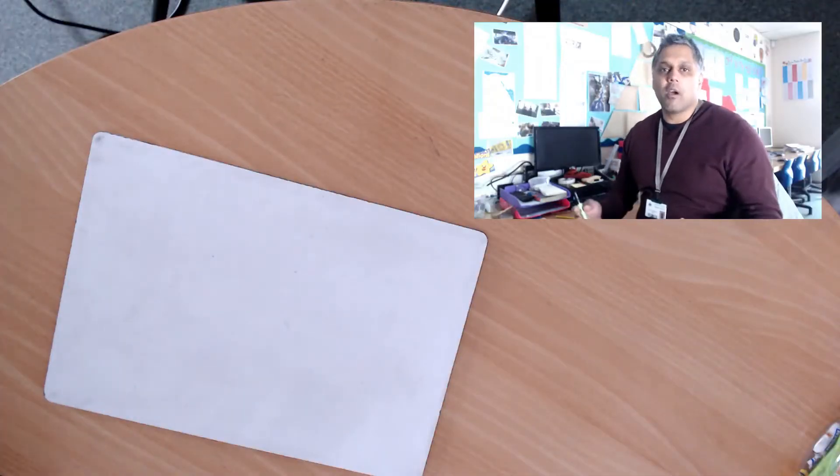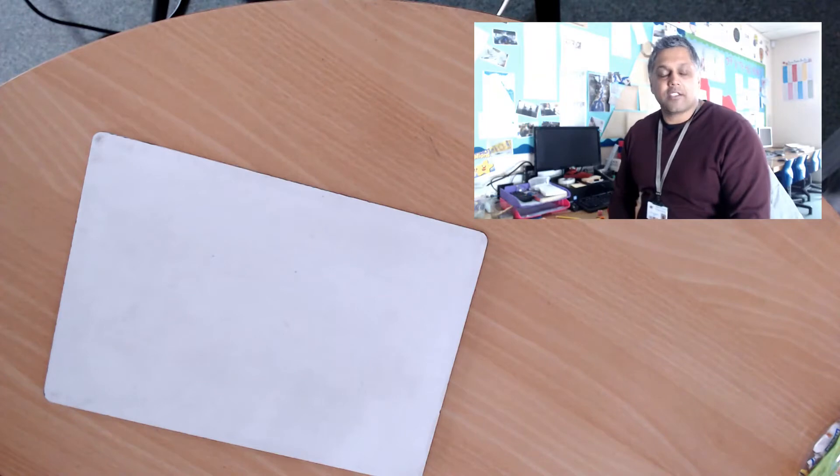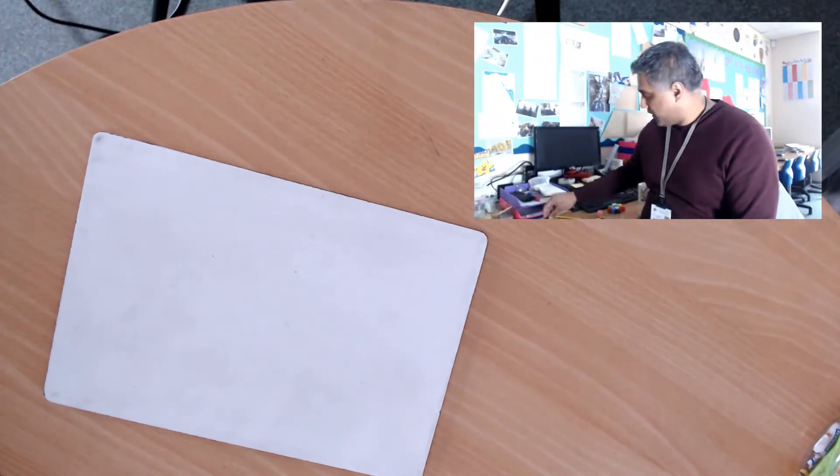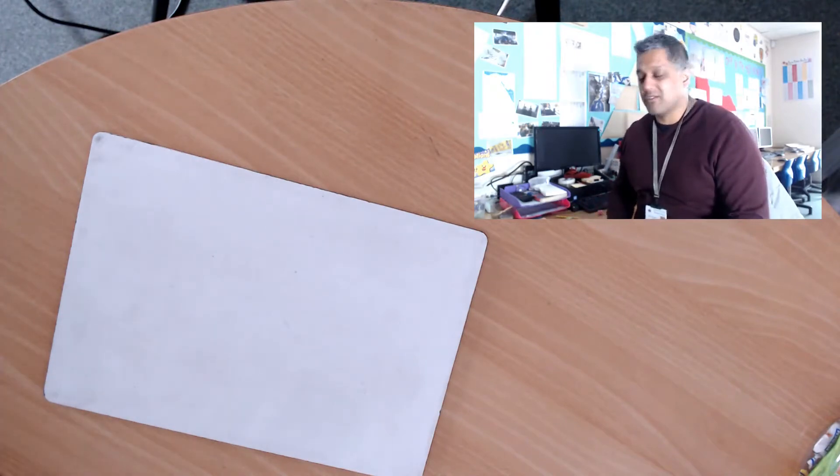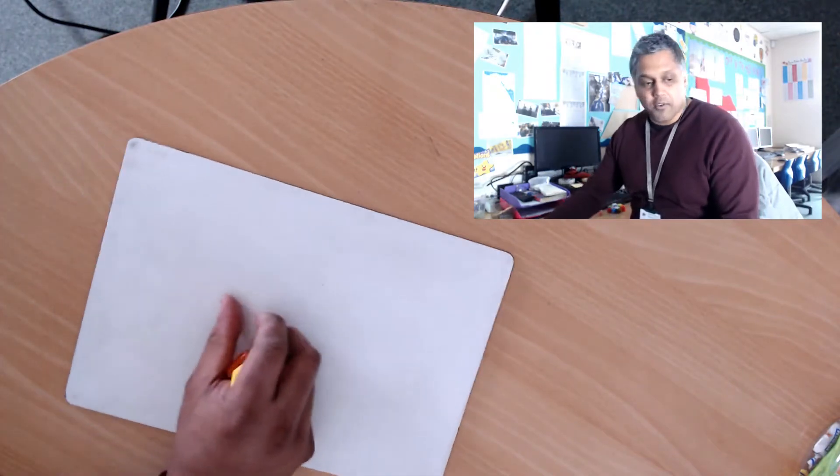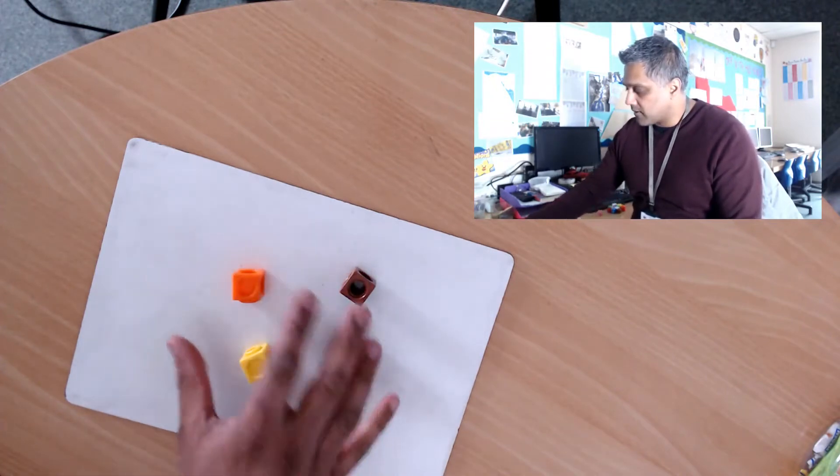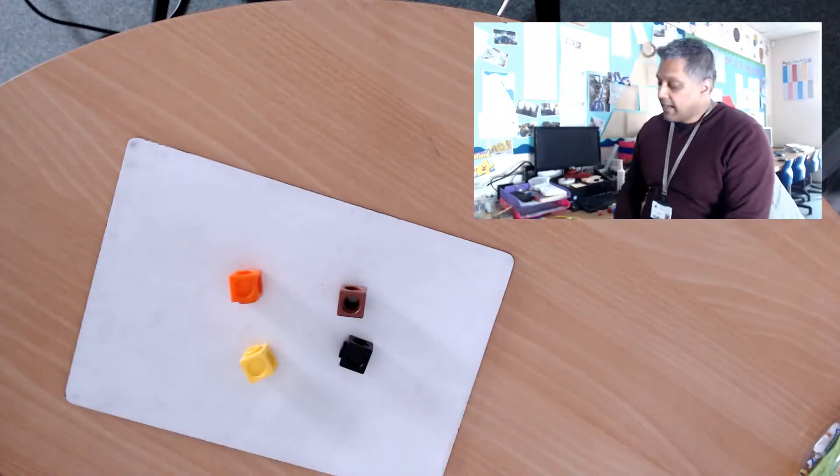Numbers can be described in different ways, and today we look at the words odd and even and what they mean and how we can recognize if a number is odd or even. First, you'll need some objects—you can use pens, pencils, biscuits, whatever you got at home. I've got some blocks here.